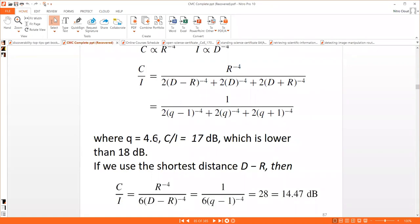If we use the shortest distance d minus r, considering only the six cells available, if you substitute that value, the answer is going to be around 14.47 decibels, which is once again somewhat less than the correct value.